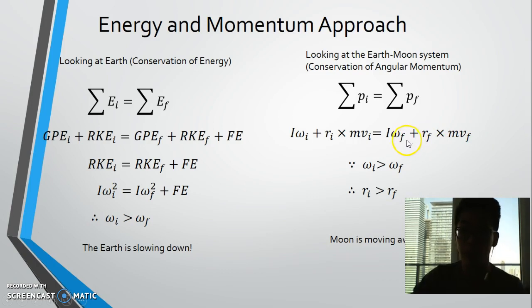And so since the moon cannot spin faster due to tidal locking, which is another concept that you'll learn about hopefully sometime, that means that the only thing that can increase is either the radius or the velocity. And in this case, both have to increase. And therefore, since the radius increases, that means that the moon is moving away from the earth.